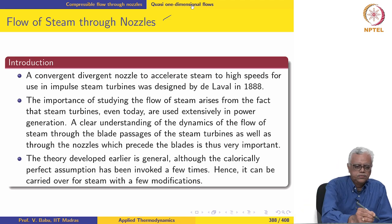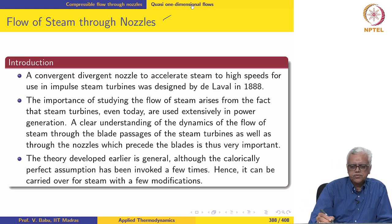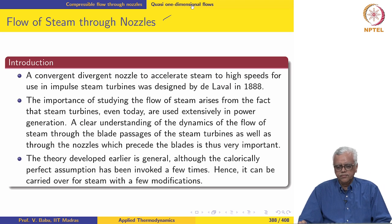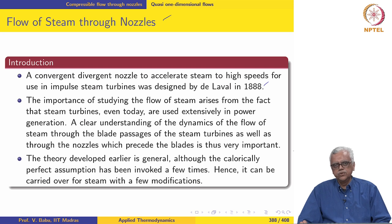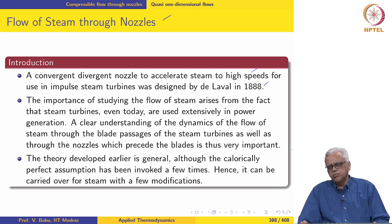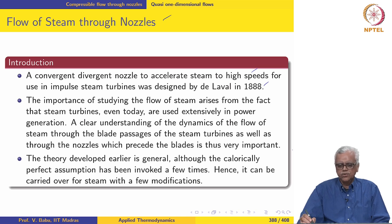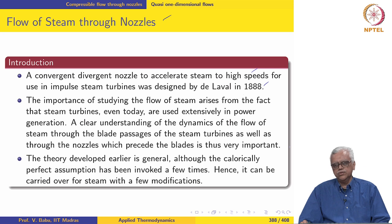Let us now move on to discussion of flow of steam through nozzles. De Laval in 1888 actually used a convergent-divergent nozzle to accelerate steam to high speeds for use in impulse steam turbines. Impulse steam turbines typically use high velocity steam at the inlet, so we used converging-divergent nozzles in 1888 itself.